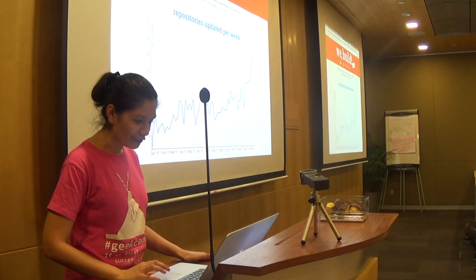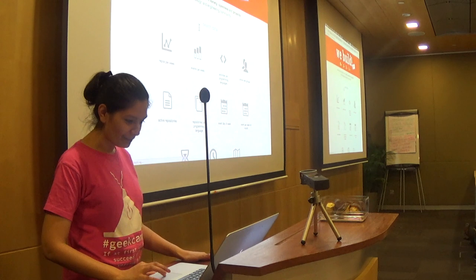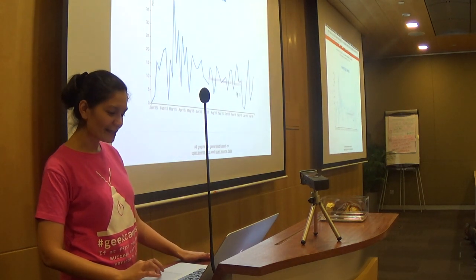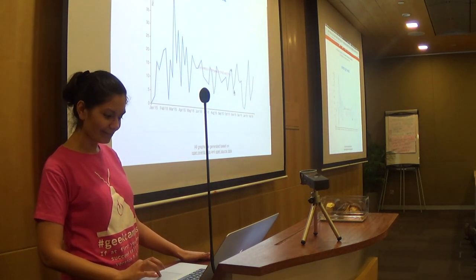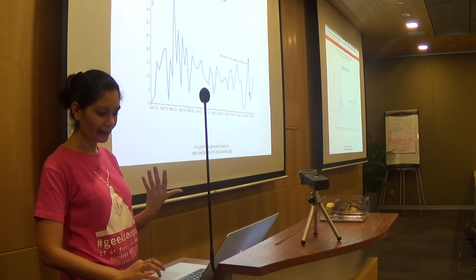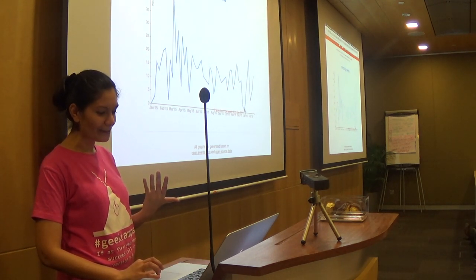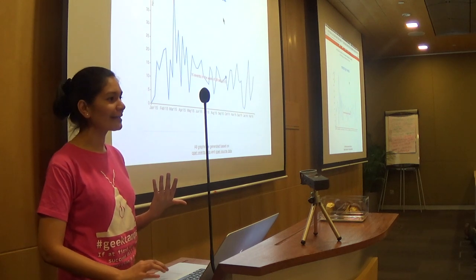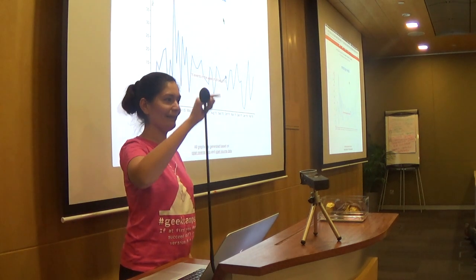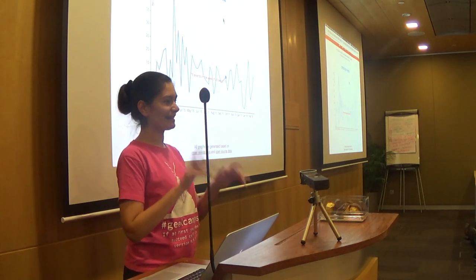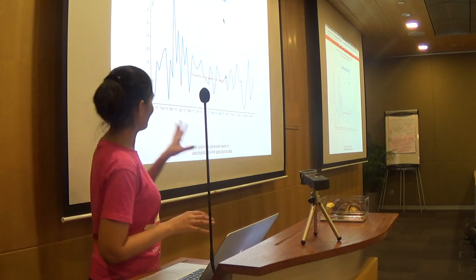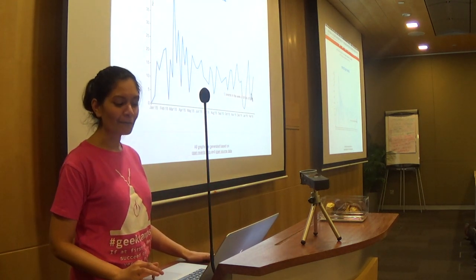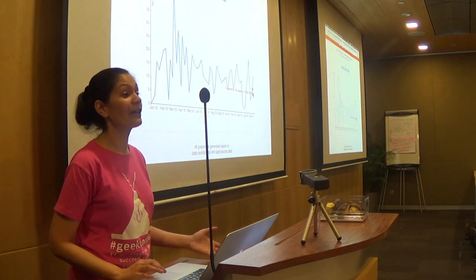The other interesting graph is events per week. It's fairly consistent but growing a little bit, and there are definite dips around the holidays. The repository graph has no dip at all — developers are still sitting at home coding. But events have a slight dip, and a couple of weeks ago was Chinese New Year.